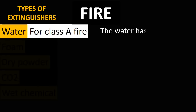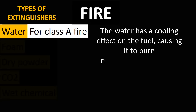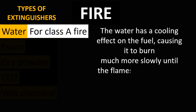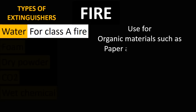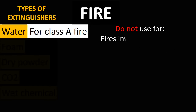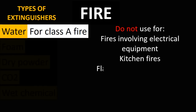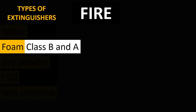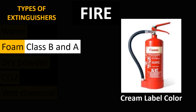Water has a cooling effect on the fuel, causing it to burn much more slowly until the flames are eventually extinguished. Water type fire extinguishers are used for organic materials such as paper and cardboard, fabrics and textiles, wood and coal. Do not use water type fire extinguishers for fires involving electrical equipment, kitchen fires, or flammable gas and flammable liquids.